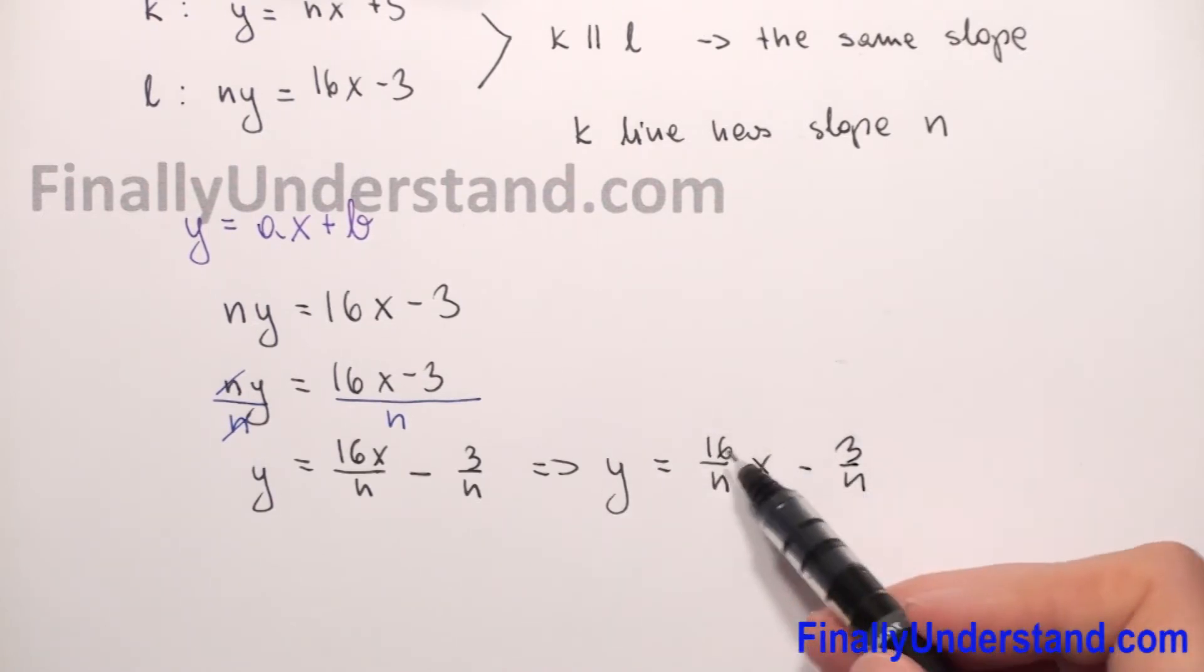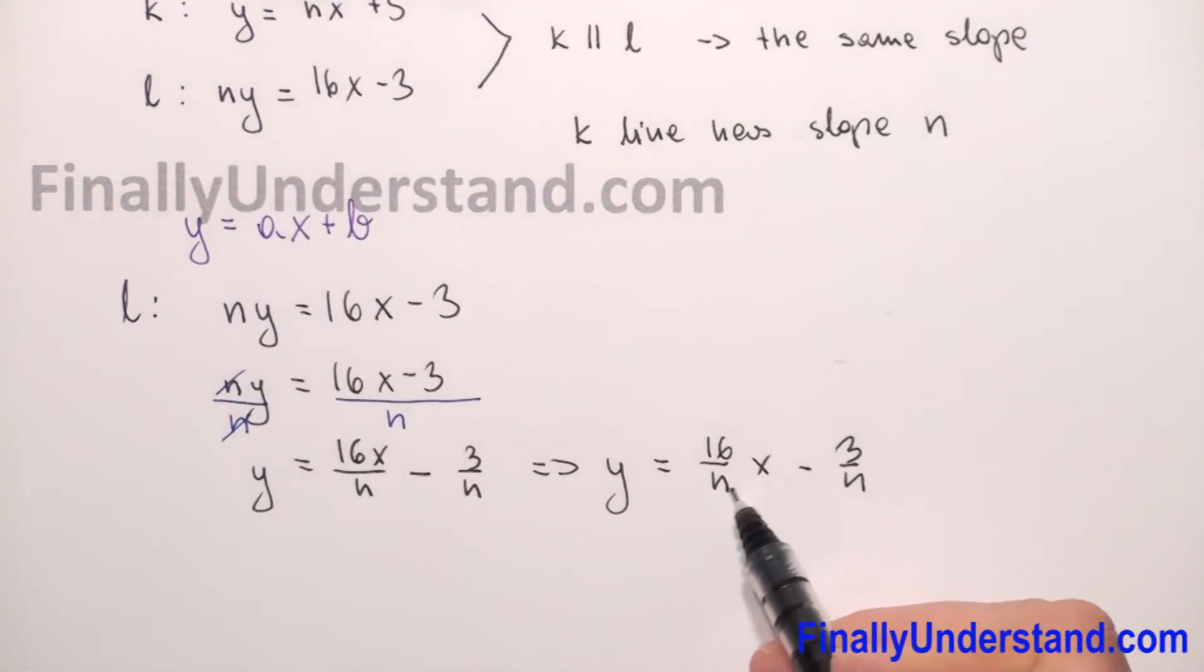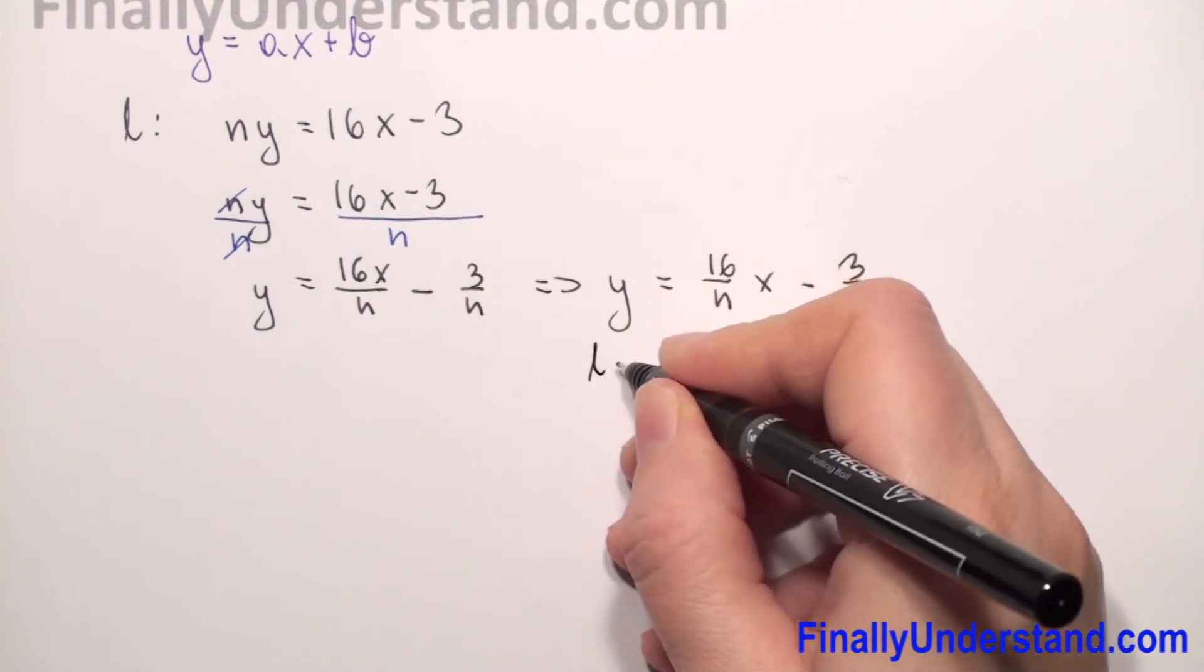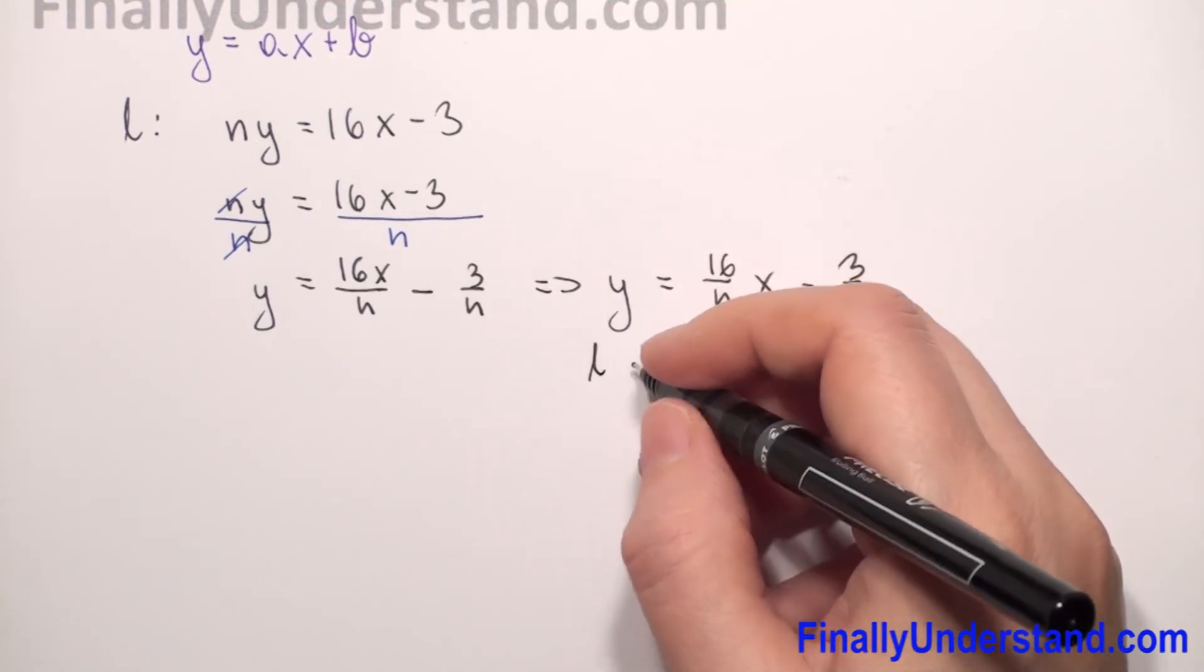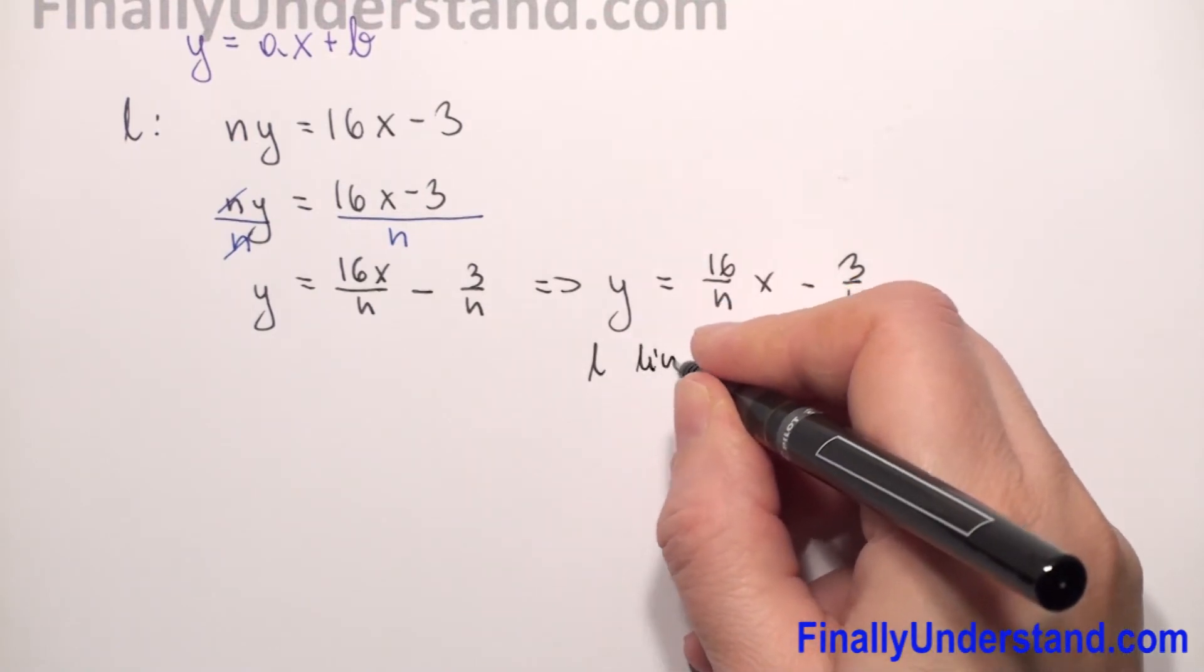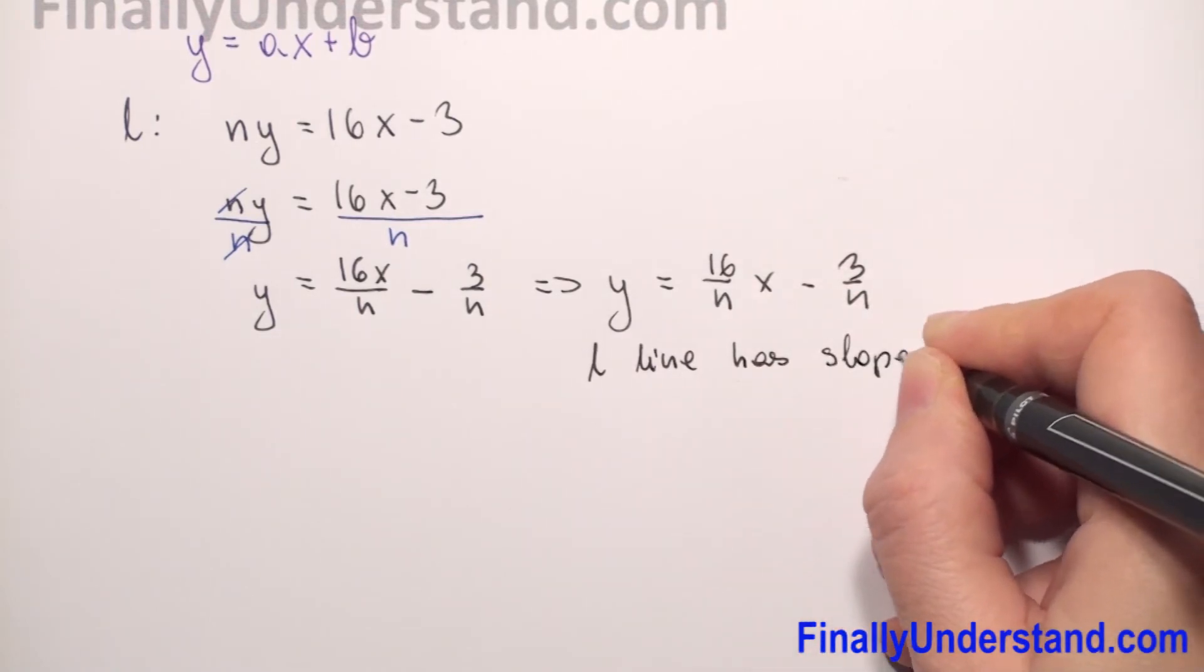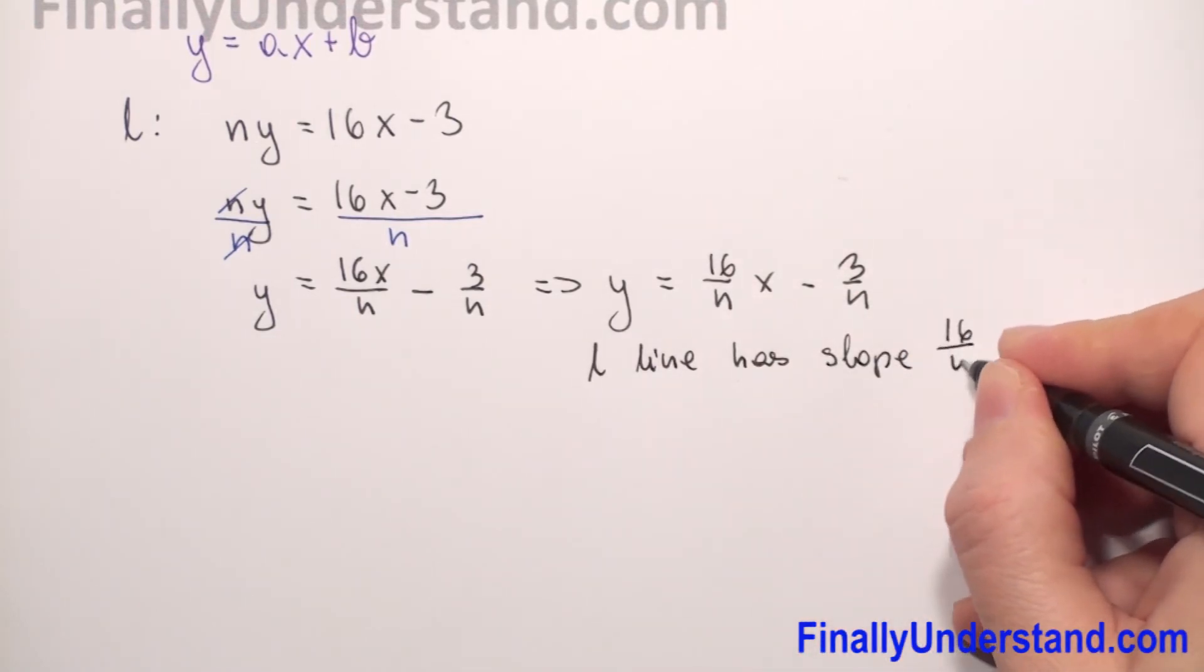We see that the slope of line l is what? The coefficient before x. The coefficient before x is 16/n, so line l has slope 16/n.